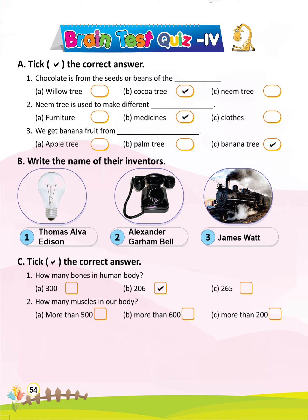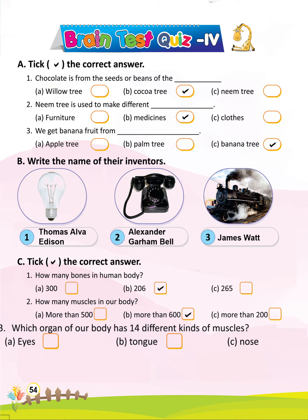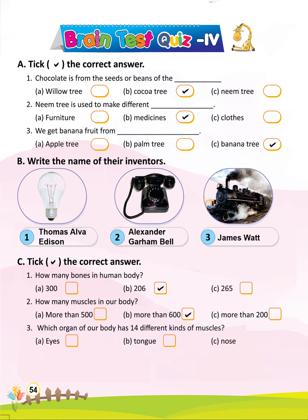2. How many muscles in our body? B. More than 600. 3. Which organ of our body has 14 different kinds of muscles? B. Tongue.